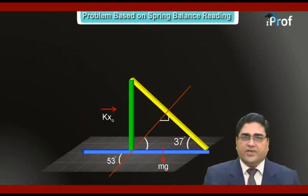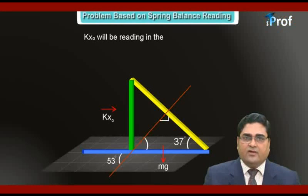Now, suppose the compression in the spring is X naught. If X naught is the compression in the spring, so K X naught will be the reading of spring balance.